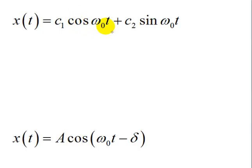This video shows how we get from a linear combination of cosine omega naught t and sine omega naught t to combine this into just one trig function.